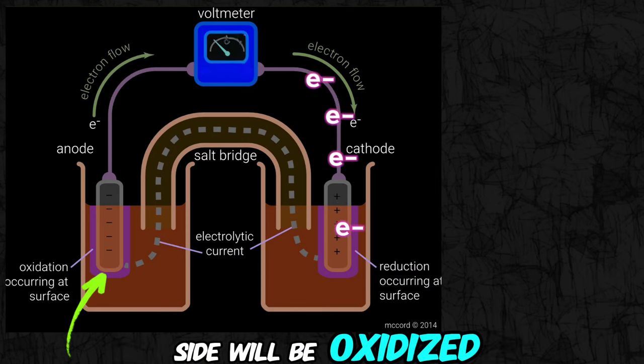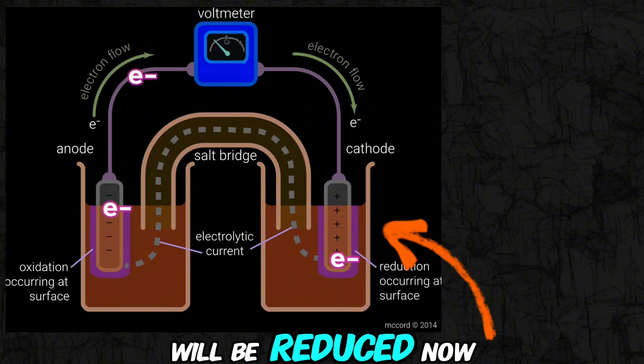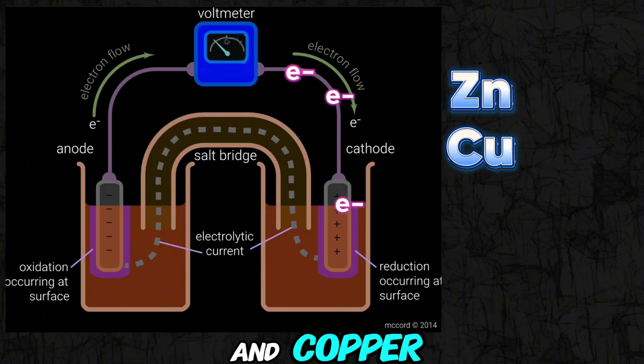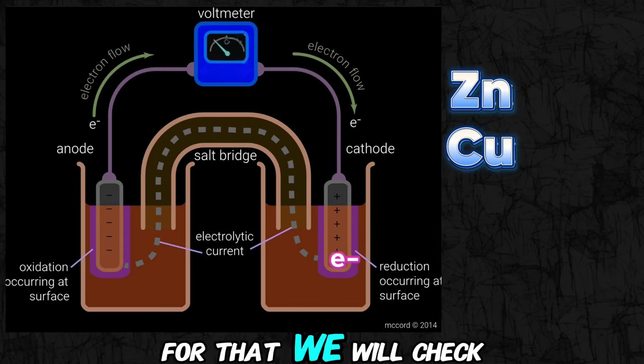Now let's say you have zinc and copper. Then which will be oxidized and which will be reduced? For that we will check the electrode potential.